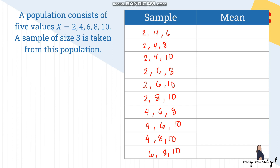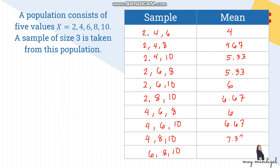Next, get the mean of each sample by adding and dividing by 3. The means are: 4, 4.67, 5.33, 5.33, 6, 6.67, 6, 6.67, 7.33, and 8. It's okay to round to two decimal places.